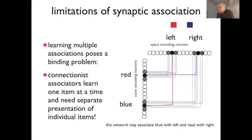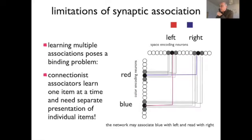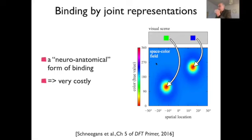So the binding problem is present throughout — think back to any connectionist network: they learn one concept or item at a time, never simultaneously learning two qualitatively different concepts or objects. Synaptic binding doesn't solve the binding problem; it is a more rigid solution. The real-time approach I described handles it on first exposure, but the downside is it is very costly in terms of neurons.